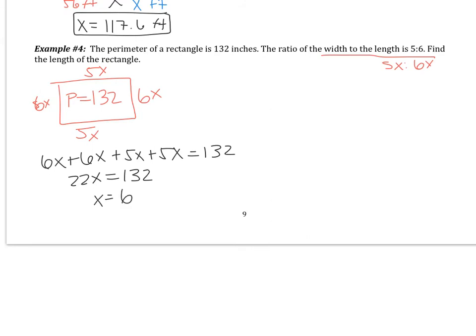Now, the question does not ask us to find x. It asks us to find the length of the rectangle. The width to the length is 5 to 6, which means the length is 6x. So then we are going to say that the length is 36 inches. 6 multiplied by my x of 6. So that should be a review of what we did yesterday.